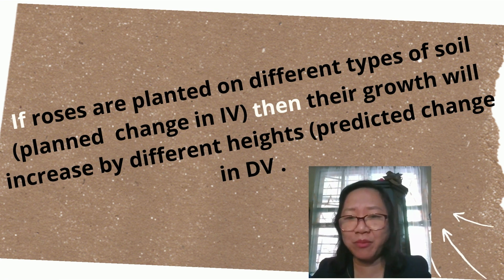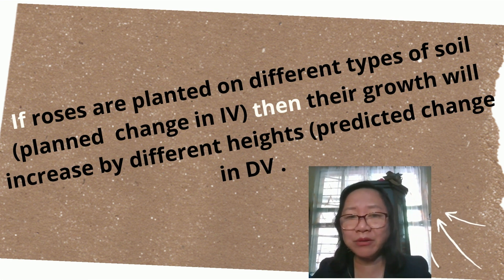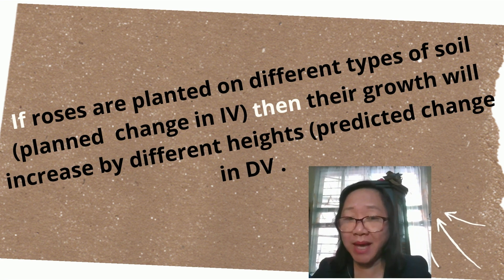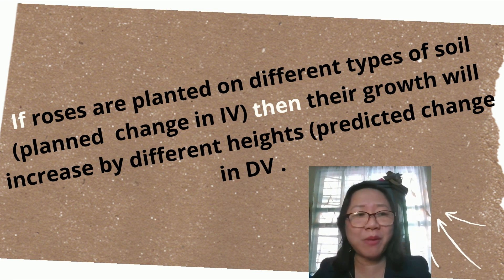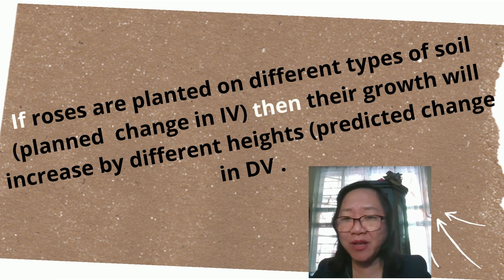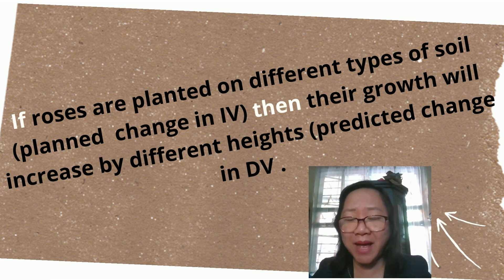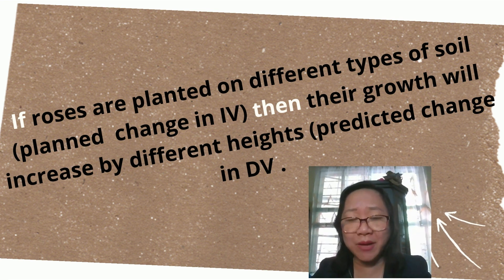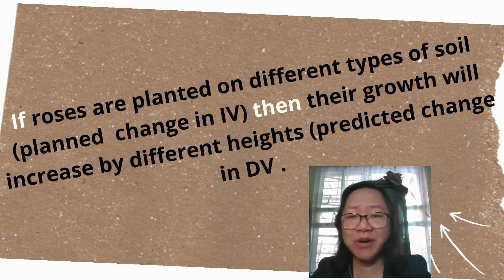Question three: does it show the relationship of the dependent variable and independent variable? The independent variable is soil, and the dependent variable is growth. Yes, it shows the relationship. Question four: can it be tested and falsifiable? Yes, because we can measure the growth — the increase in height — and using a statistical method, we can negate or affirm our hypothesis. Since all four answers are yes, this hypothesis is good.